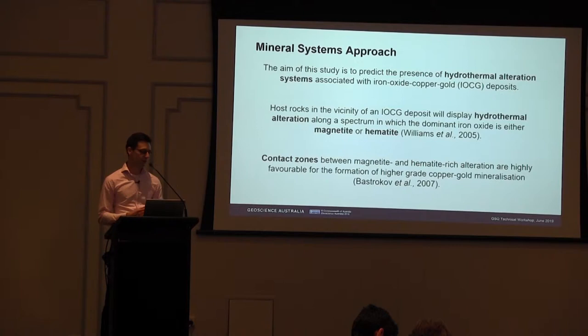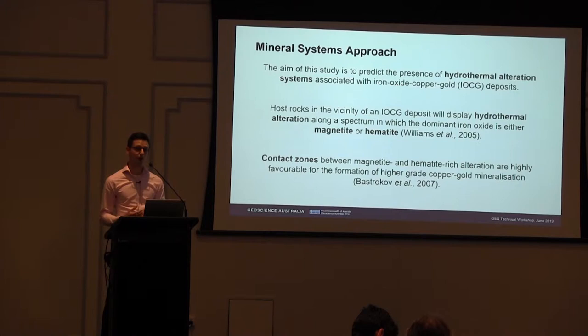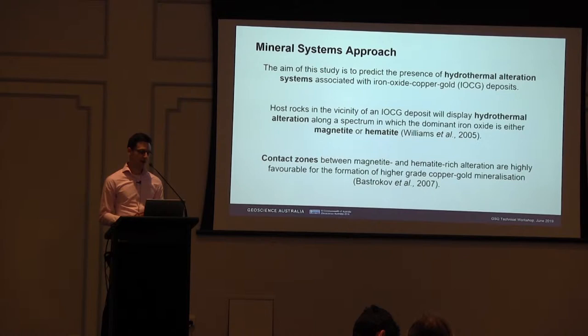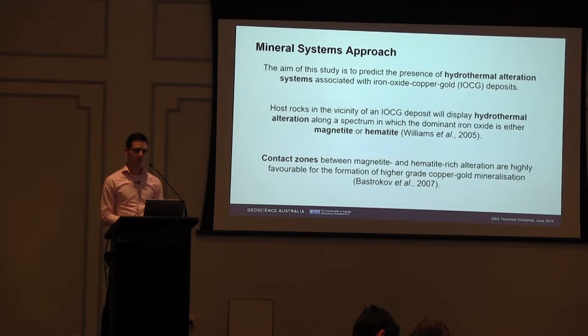The aim of this study is to predict the presence of hydrothermal alteration systems associated with iron oxide copper gold deposits. There are two bits of information we're using to target those hydrothermal alteration systems. First, we're expecting the host rocks in the vicinity of an IOCG to display hydrothermal alteration along a spectrum in which we'll see magnetite and hematite. In addition, we're expecting contact zones between magnetite and hematite-rich alteration to be highly favourable for the formation of higher grade copper gold mineralisation.